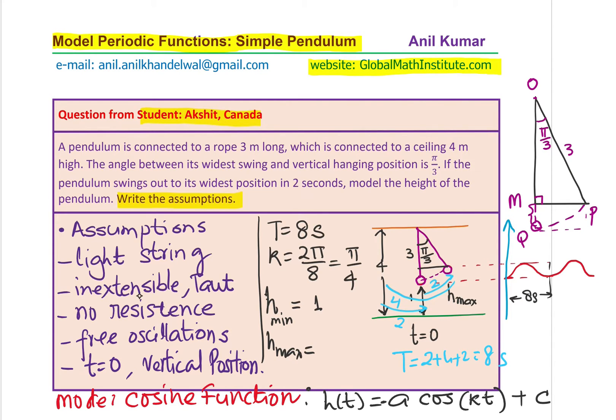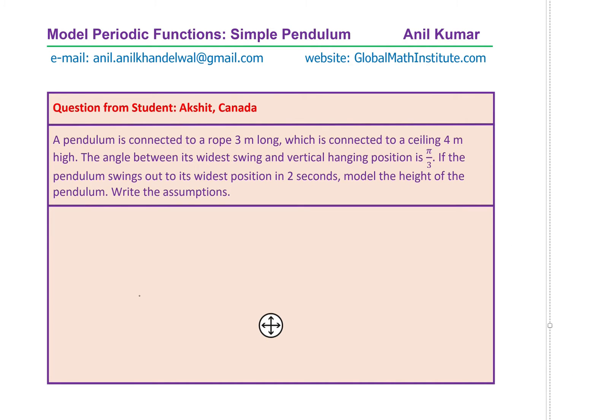We can say that the maximum height which it will go up by will be 1 plus this difference, 3 minus 3 cos of pi by 3. That becomes the maximum height in this particular case and that should help you to find the function. I hope now all the parameters are clear. You should be in a position to write down the trigonometric function to represent the height of the pendulum above the ground.